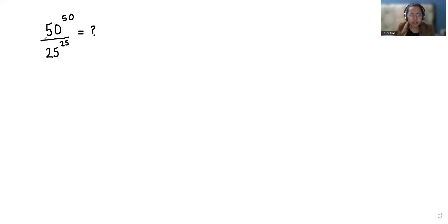Now 50 power 50, we can write it as 5 times 10, whole power is 50. And in the denominator, 25 we can write as 5 power 2, whole power 25.